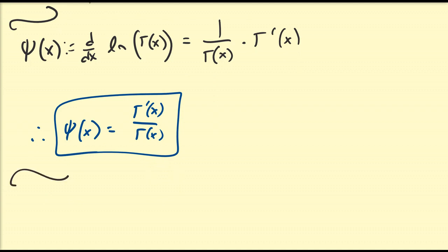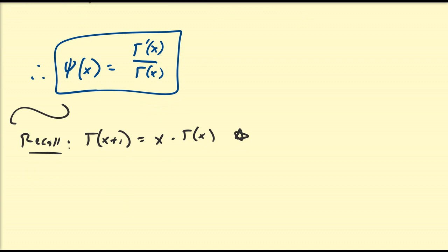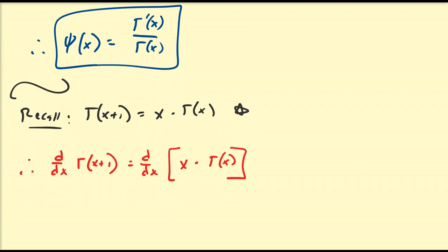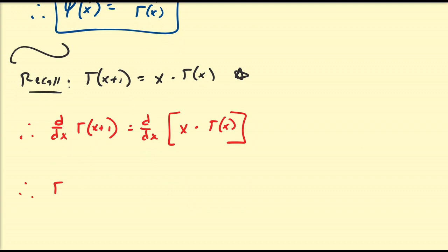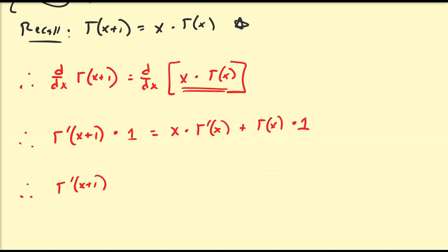Let's talk about a couple of properties associated with this function. Recall that gamma of x plus 1 is equal to x times gamma of x — that's one of the recursive properties of the gamma function. Now, taking the derivative of both sides with respect to x: the derivative of gamma of x plus 1 is gamma prime of x plus 1, and on the right-hand side, using the product rule, we get x times gamma prime of x plus gamma of x.